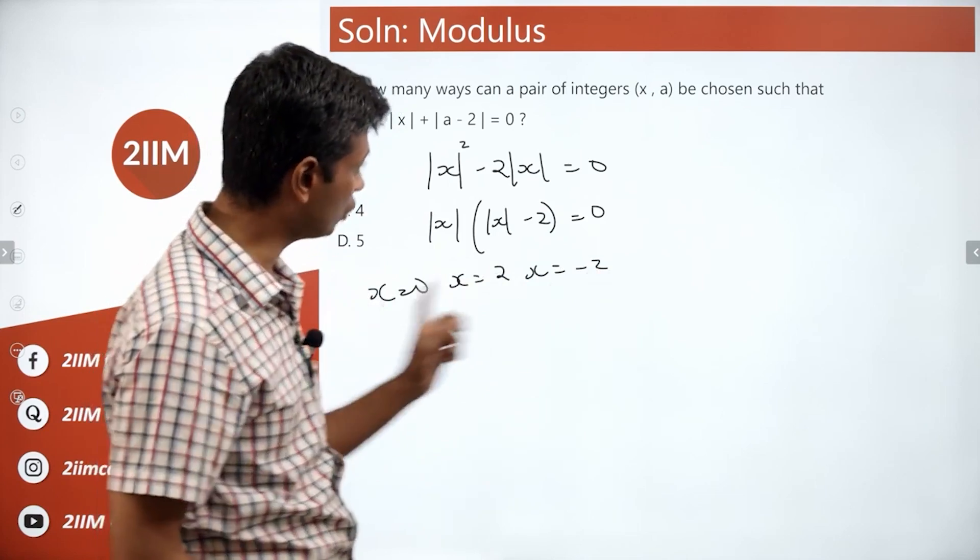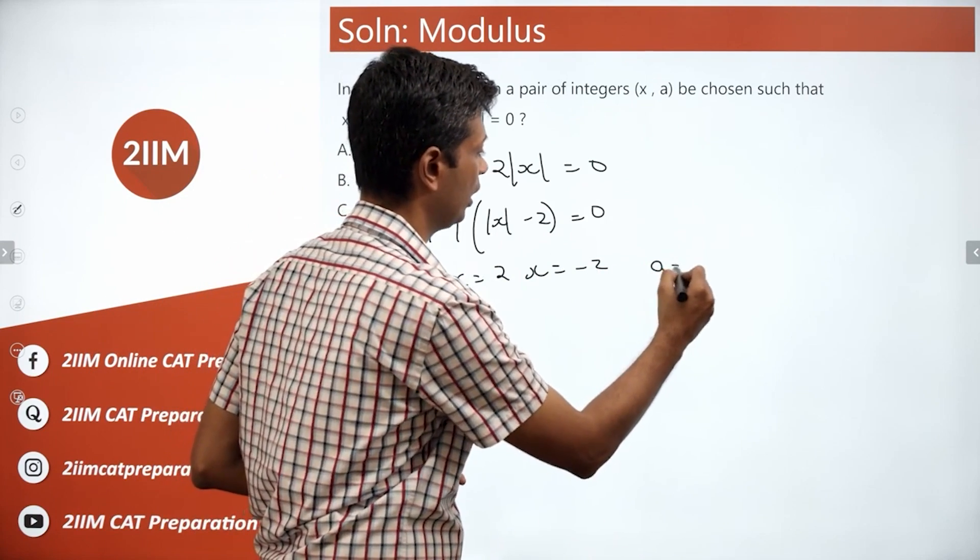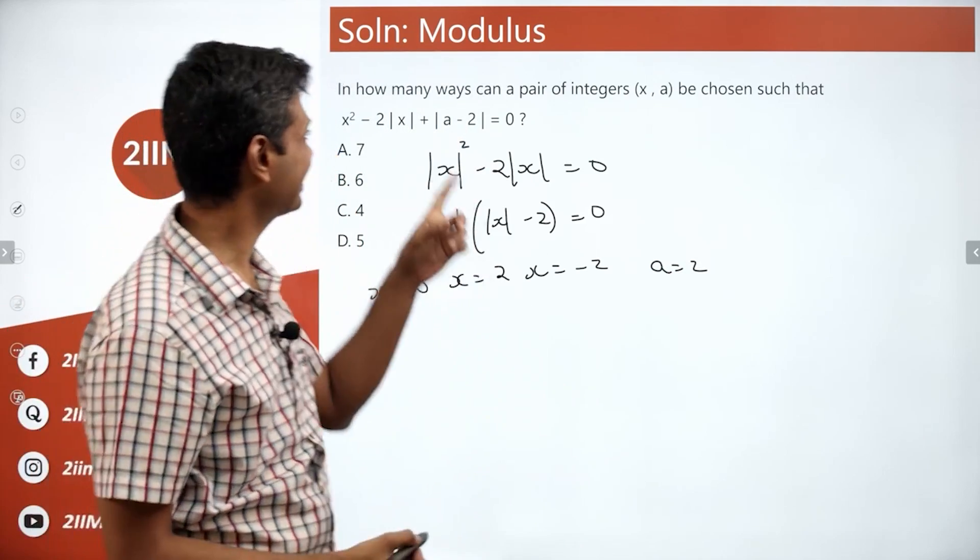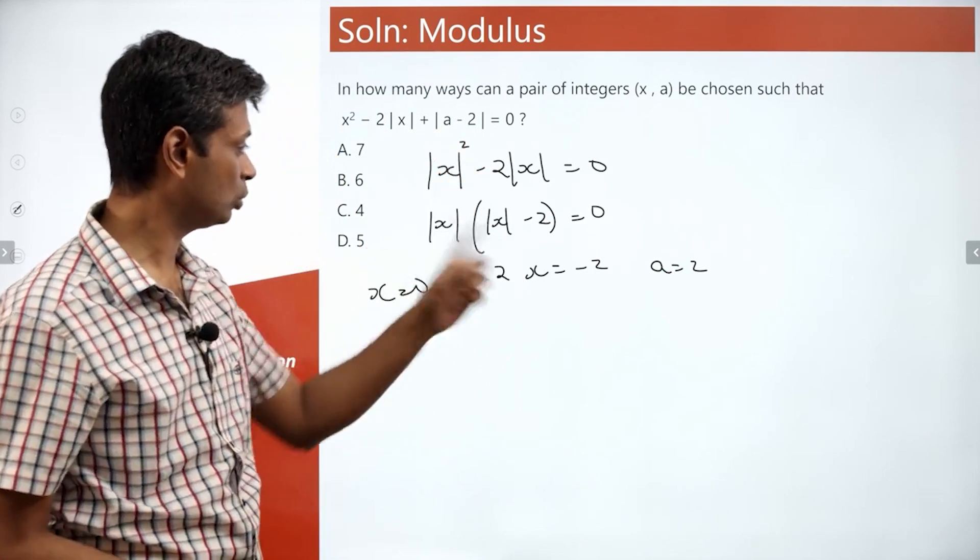So x could be 0, x could be 2, x could be minus 2. For all of these possibilities, a equal to 2 works.